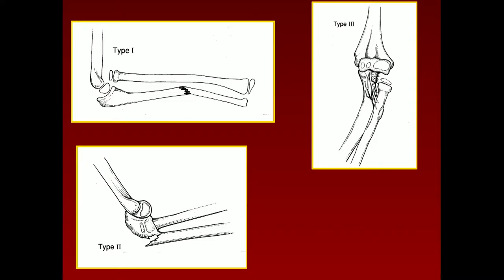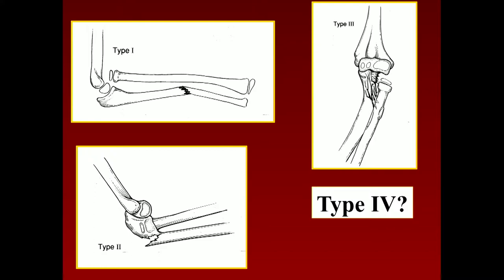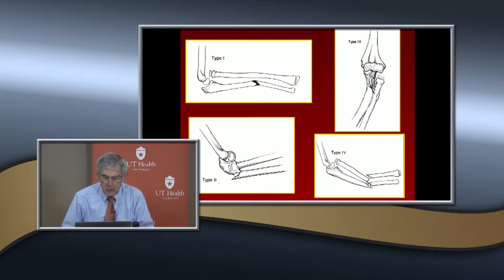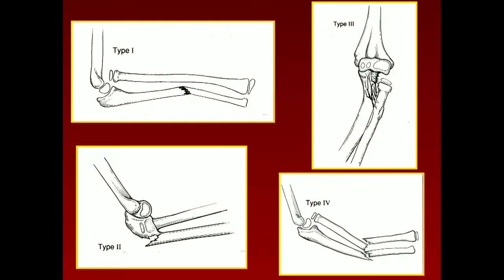Type three is lateral to anterior lateral — mostly lateral. And the fracture is a kind of green stick fracture in the olecranon. Type four is a fracture of both the radius and ulna shafts plus the dislocation. These are very rare. Type two and type four are very rare. Type three is pretty common, and the most common one is type one.